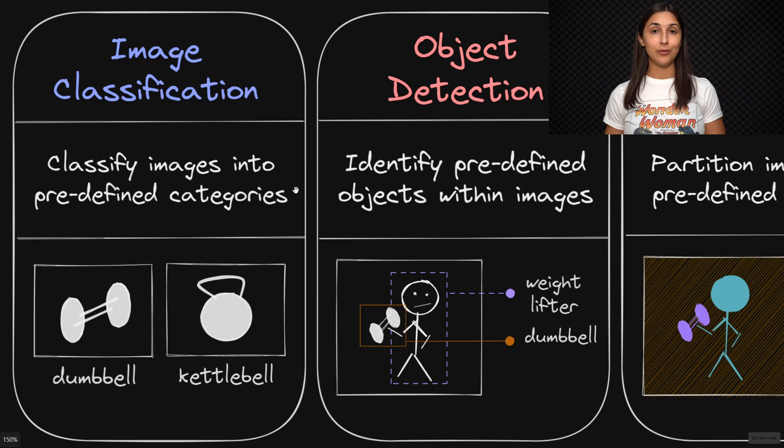In deep learning, we can deploy an artificial neural network to an image classification task where we pass images to the network, and the network is able to classify the images into predefined categories.